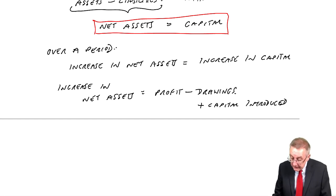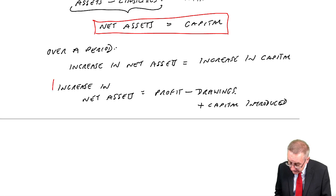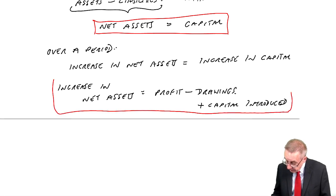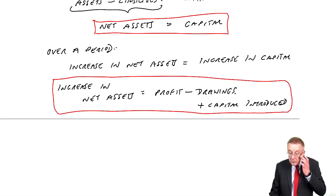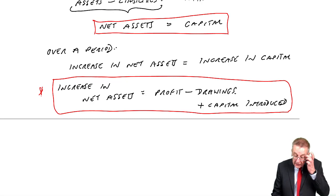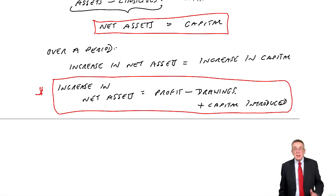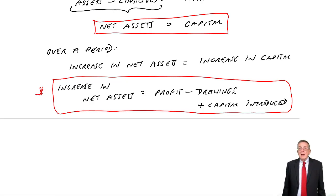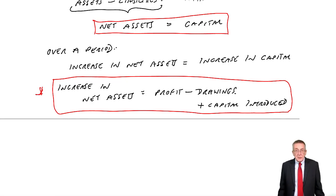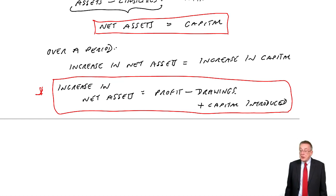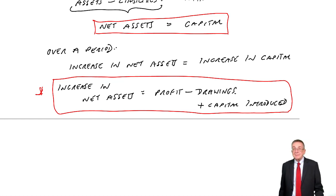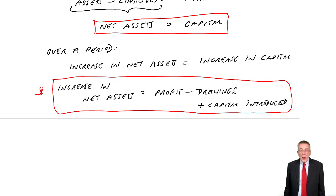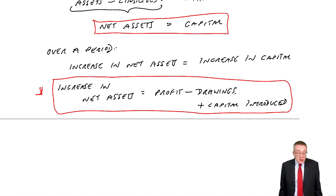The total owing to the owner changes for only three reasons over the year: it goes up because the business has made a profit; it goes down because the owner has taken out money — drawings; and it goes up because the owner has put more money in — capital introduced. And there is the second accounting equation, which you must learn.